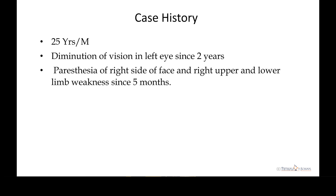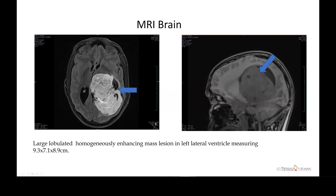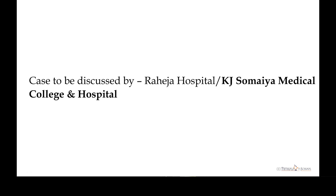Good afternoon everyone. A 25-year-old male presented with diminution of vision in the left eye since two years, paresthesia of the right side of the face, and right upper and lower limb weakness since five months. MRI brain was done showing a large lobulated homogeneously enhancing mass lesion in the left lateral ventricle measuring 9.3 by 7.1 by 8.9 centimeters, causing ventricular dilatation along with a midline shift.